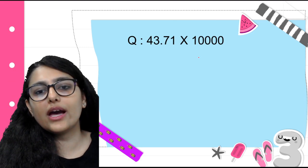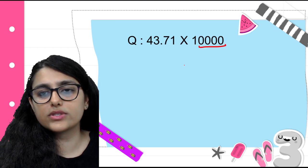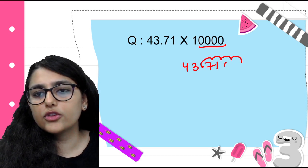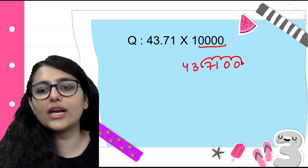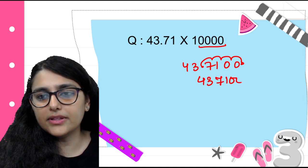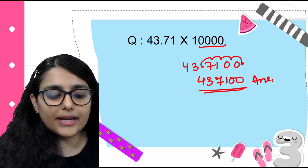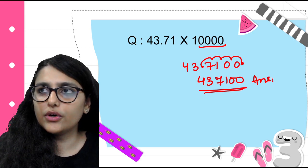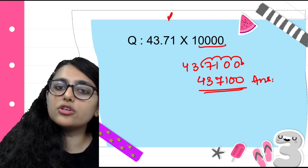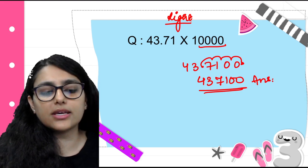Next: 43.71 × 10,000 — four zeros, so move 4 places to the right: 1, 2, 3, 4. The two decimal digits pass and I add 2 zeros. So the answer is 437,100. I hope multiplication by 10, 100, 1000, 10,000 and so on is clear. In multiplication we move towards the right-hand side, and in division we go towards the left, which we will study next.